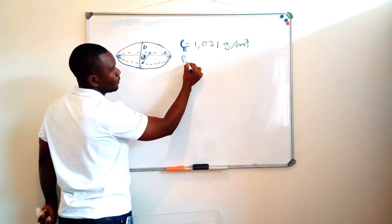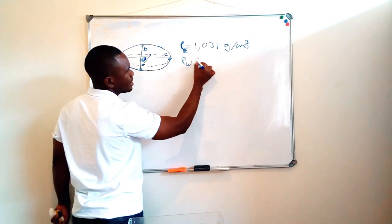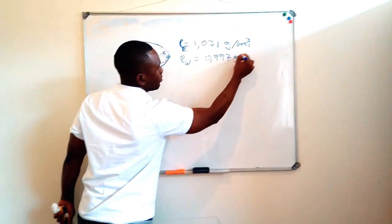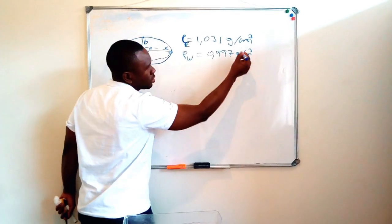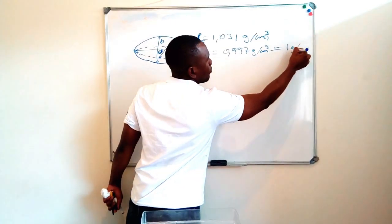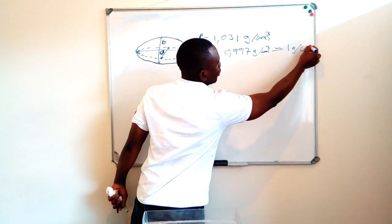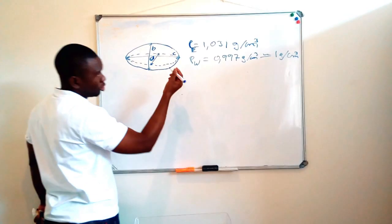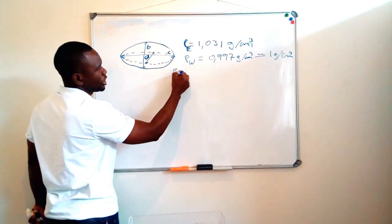And then this water here has a density of 0.997 grams per centimeter cubed, or I can just say 1 gram per centimeter cubed.